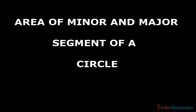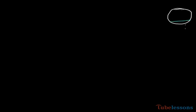Hello viewers, welcome to this video session. Now we are going to discuss the area of minor and major segments of a circle. If you draw a chord, the circle is divided into two parts: this lower part is called the minor segment, and the upper part is called the major segment.